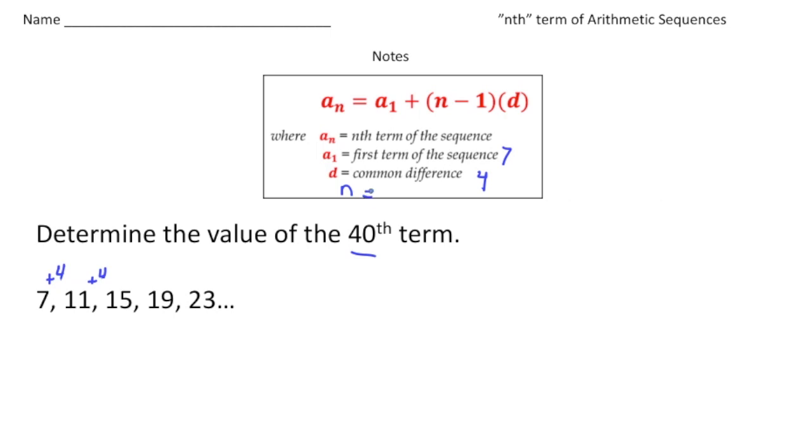Let's plug in what we know. a sub n is going to equal 7 - that's our first term - plus... let me erase that.